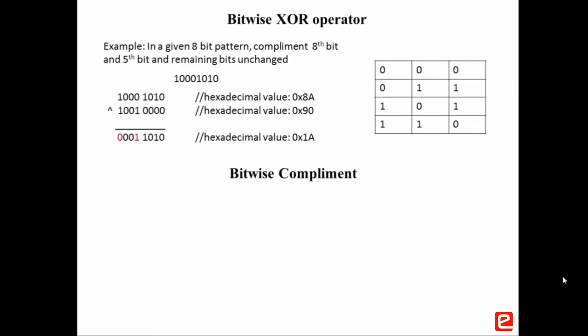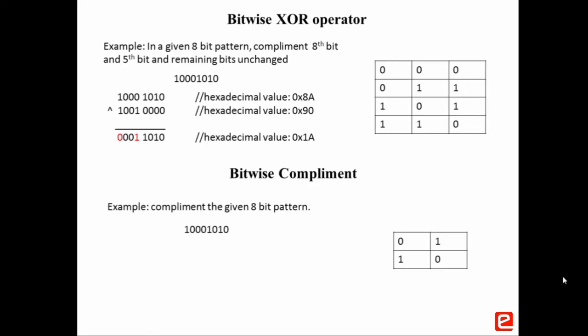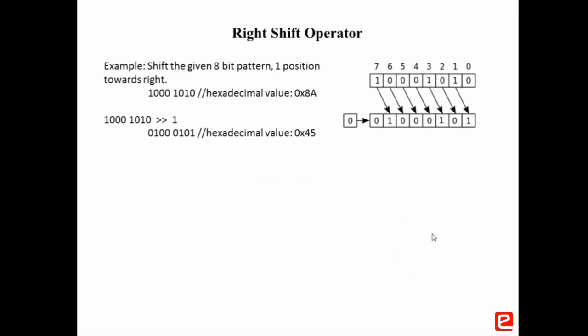Bitwise complement. The complement operator is used to complement the individual bits of given data. If the bit is 0, it will make it 1; if the bit is 1, it will make it 0. Consider an example: complement the given 8-bit pattern 11100101. The complement of the data will be 00011010, which is 0x75 in hexadecimal. Right shift operator: this operator is used to shift the bits towards the right by a specified position. Consider an example: to shift the 8-bit pattern 10001010, whose hexadecimal value is 0x88, one position towards the right.